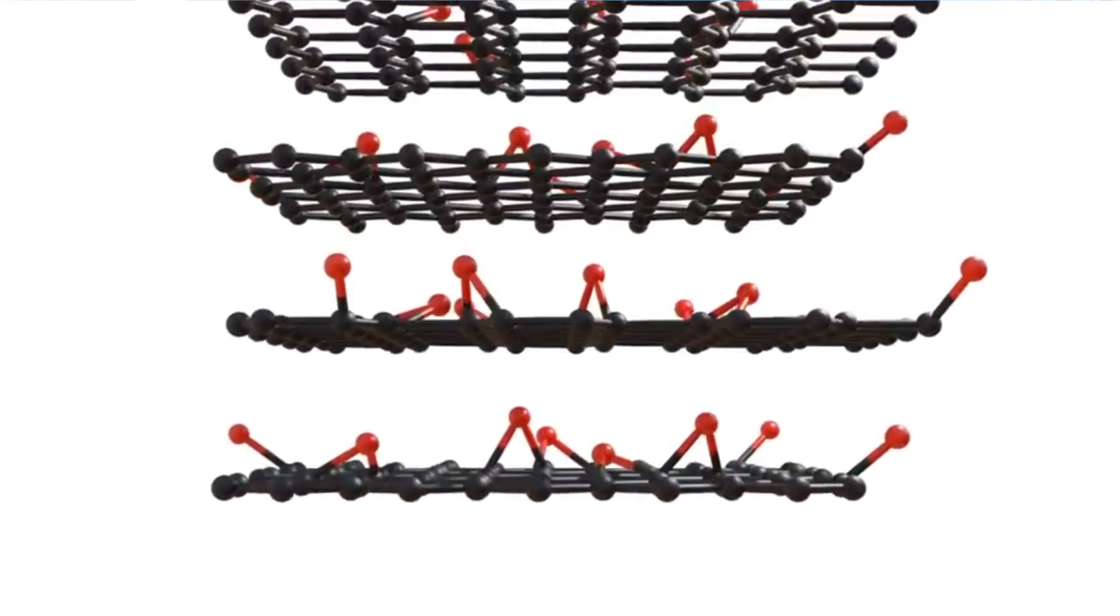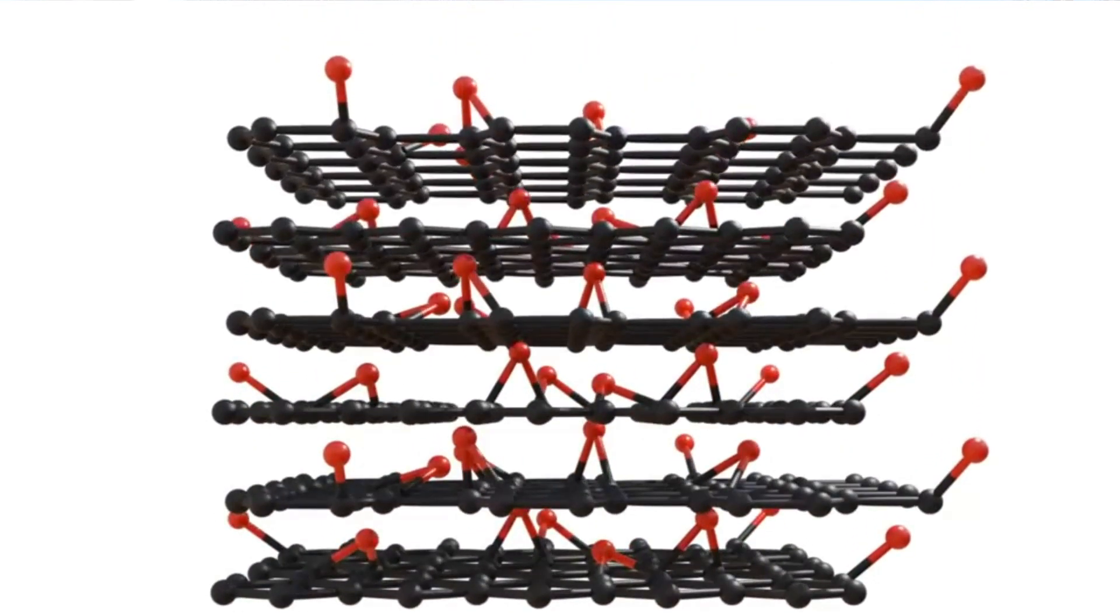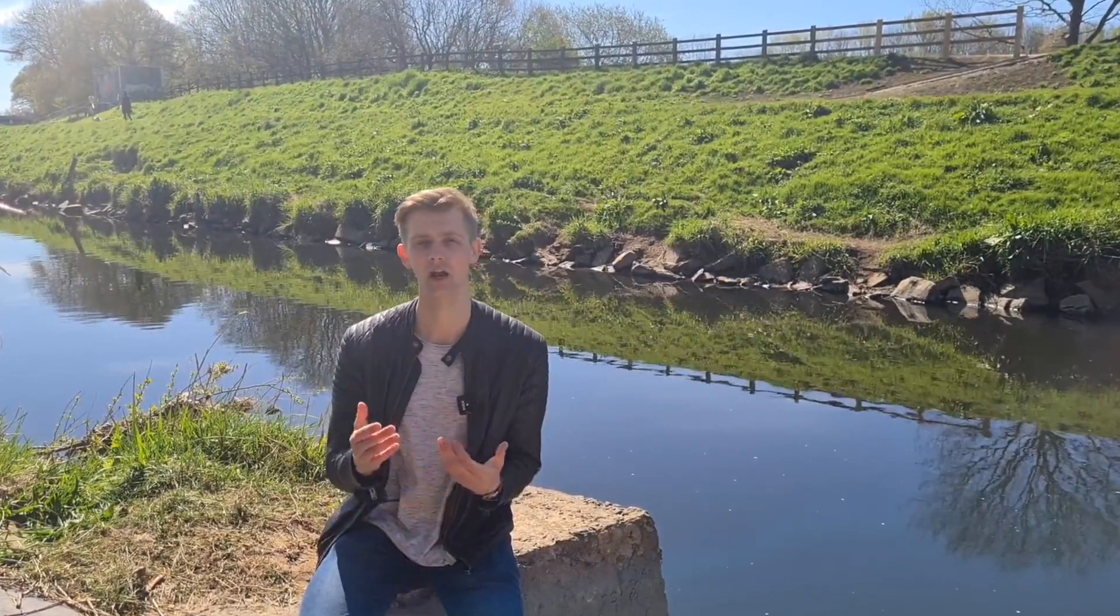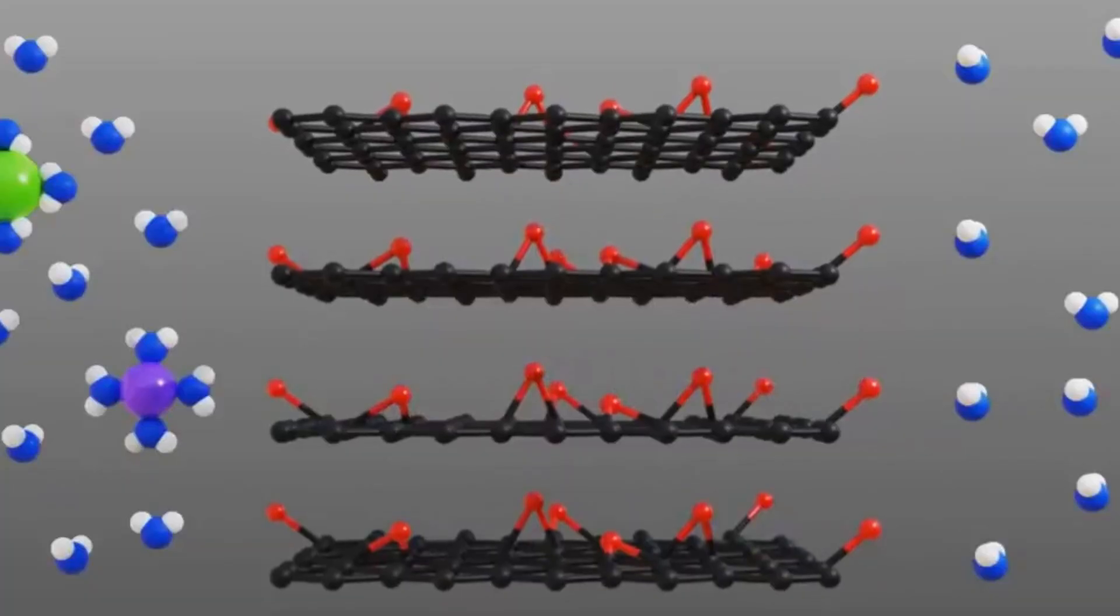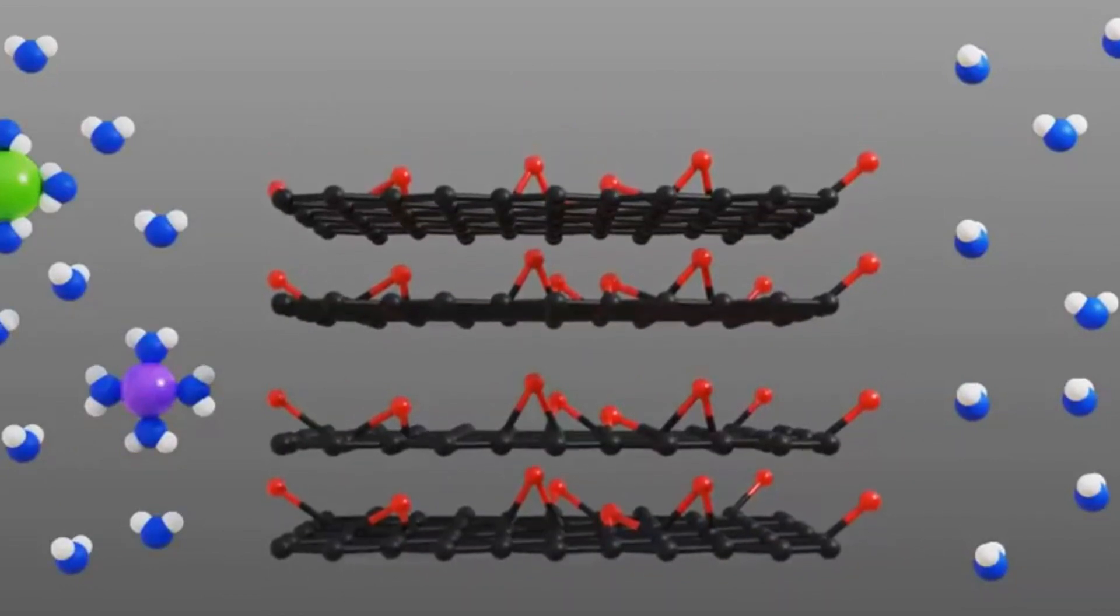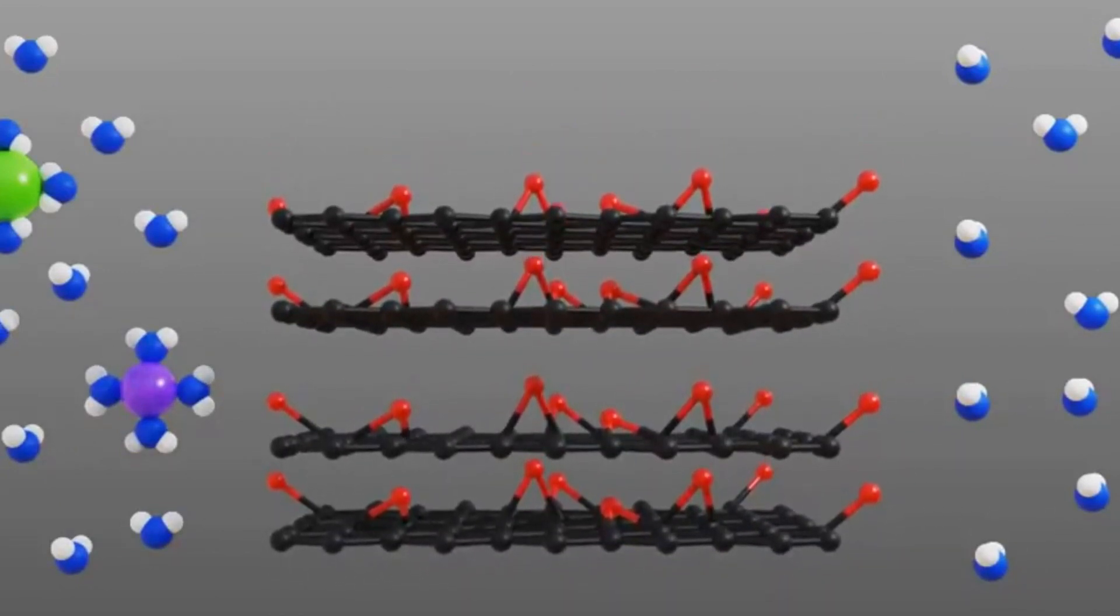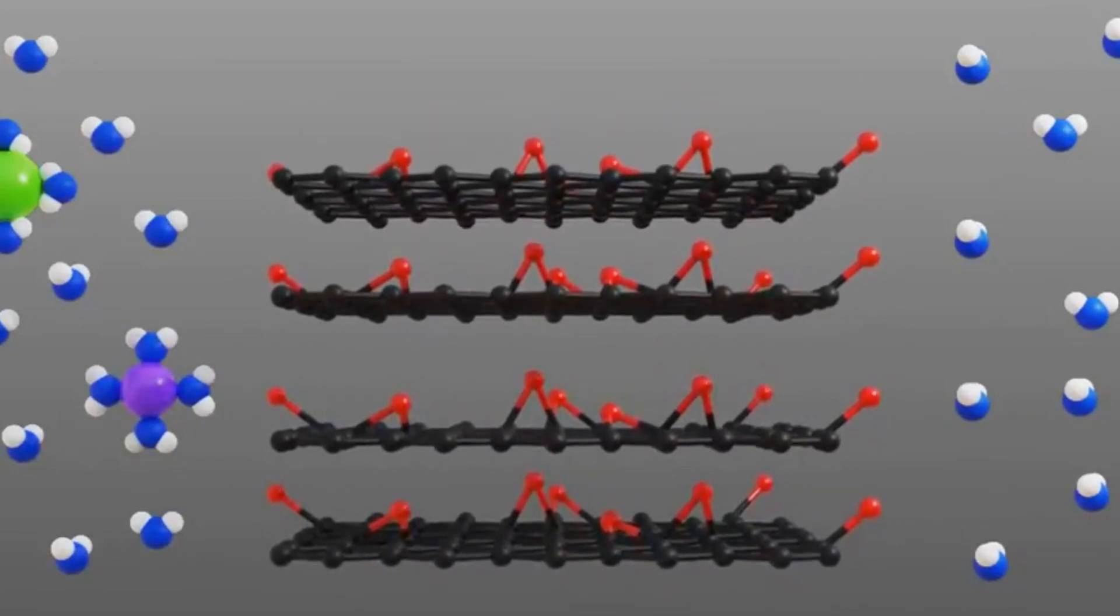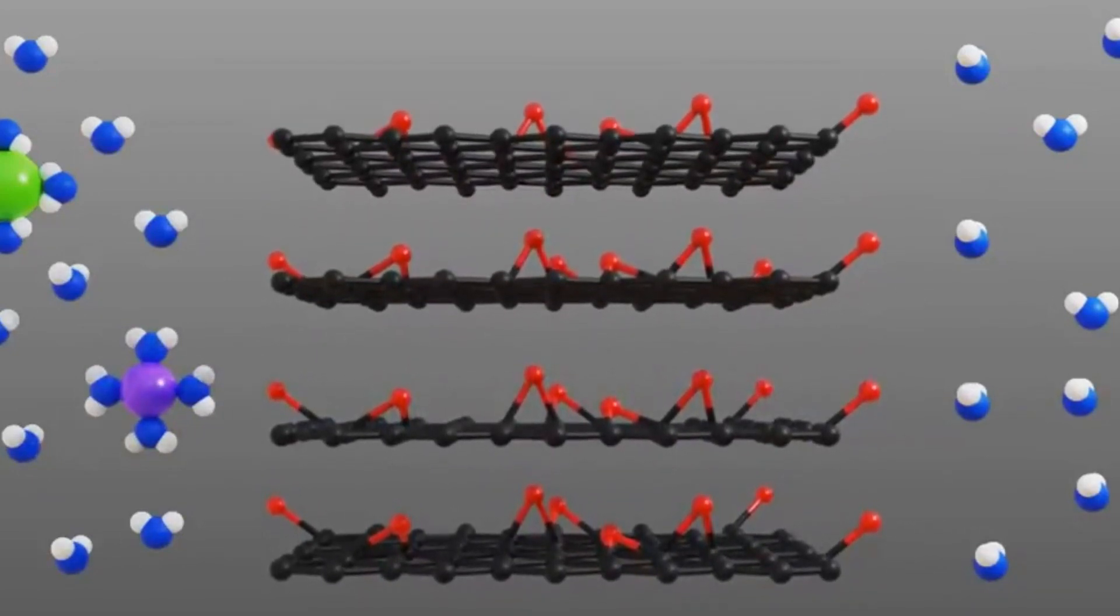When you stack graphene oxide flakes on top of each other, these oxygen groups serve a secondary purpose. They produce channels or nano capillaries that enable water to pass through. When you combine this with the atomic scale flatness of the graphene domains, you get very, very high permeability of water and low friction transport. Furthermore, you can chemically tune these oxygen functional groups so that you can control the D-spacing, that's the spacing between the flakes, to make it larger or smaller, depending on what kind of application you're interested in.